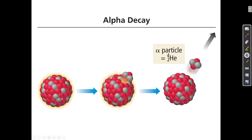An unstable nucleus is unstable because it has the wrong ratio of protons to neutrons. Stable nuclei have a different ratio. Since it's unstable, it wants to become stable, and it does that by emitting a particle. In this case it emits an alpha particle, and when that happens, the nucleus now contains two fewer protons and two fewer neutrons — so it becomes a different element.